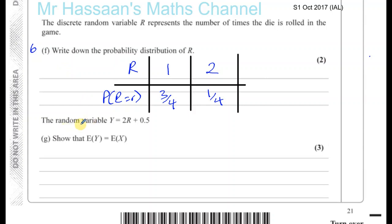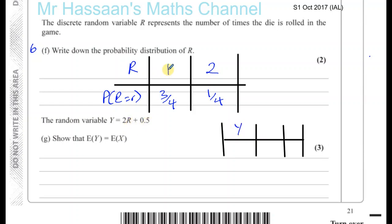Then it says the random variable Y is equal to 2R plus 0.5. We can make another table: the probability distribution of Y, which is 2R + 0.5, gives values 2.5 and 4.5. Then the question asks us to show that E(Y) equals E(X). So we need to show that the expected value of Y is equal to the expected value of X.